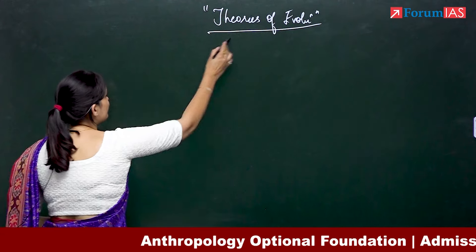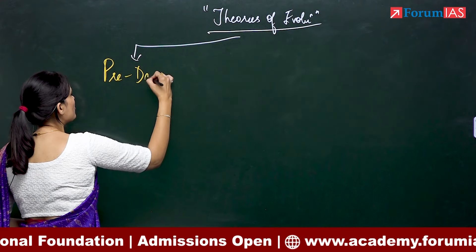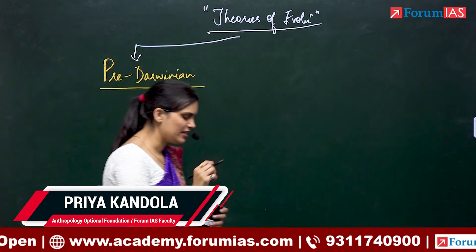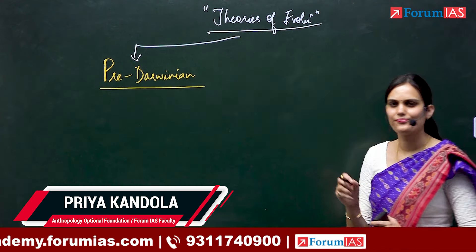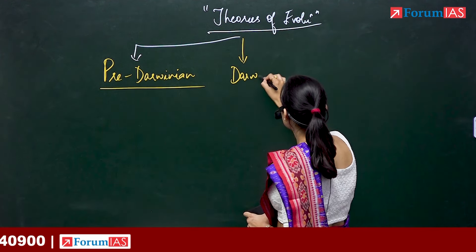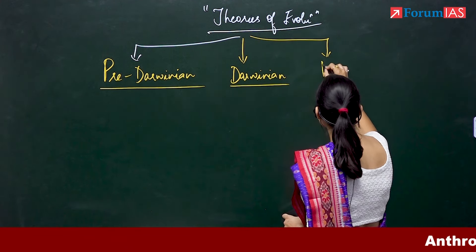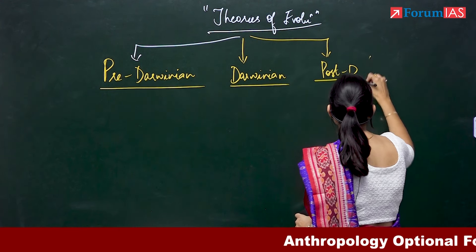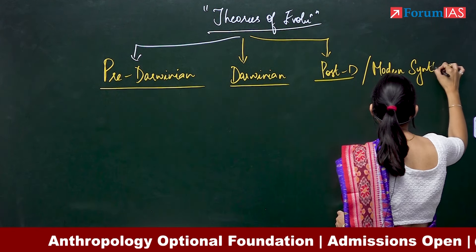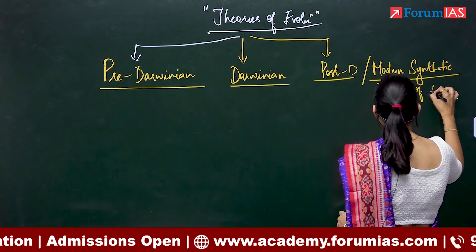The first set of theories are called pre-Darwinian theories, because when evolution as a concept springs up, the one person who comes to mind is Charles Darwin. The second set of theories are the Darwinian theories, and then we have the post-Darwinian, also called the modern synthetic theory of evolution.